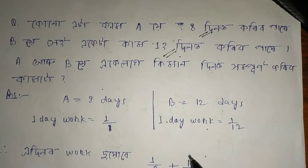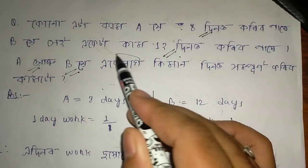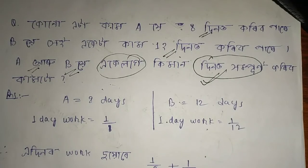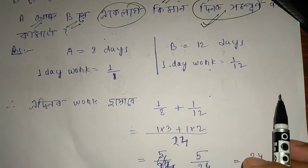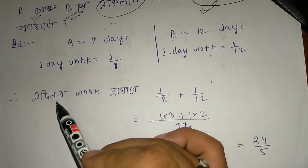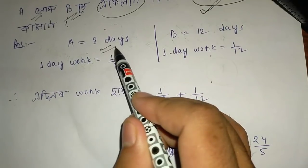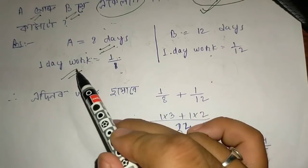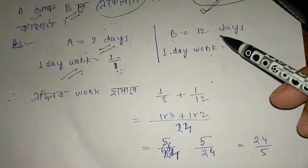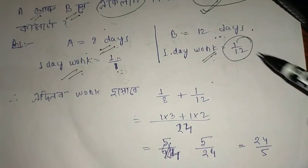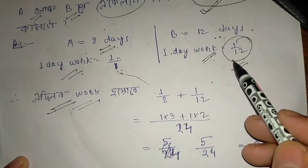A and B together: A can do the work in 8 days, B can do it in 12 days, and A will go back after 2 days. The question asks: working together, how many total days does it take? A will do 1 out of 8 per day, and B will help to complete the same work.